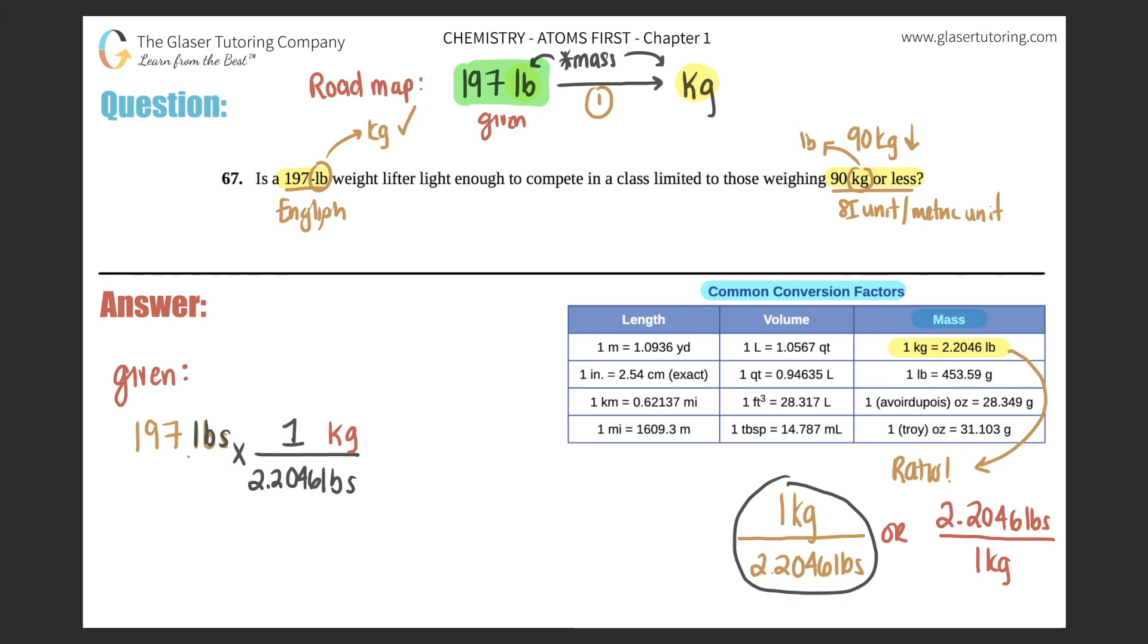And the pounds will cancel and I'm left with kilograms. So we usually multiply the top, multiply the bottom, and then we divide the two. But now in this case, the top is literally 197 times 1. And anything times itself is just its same number. So 197 over this number is the only one that's in the denominator. So I'll just keep it, 2.2046. And now I will do the division. So here we go, 197 divided by 2.2046.